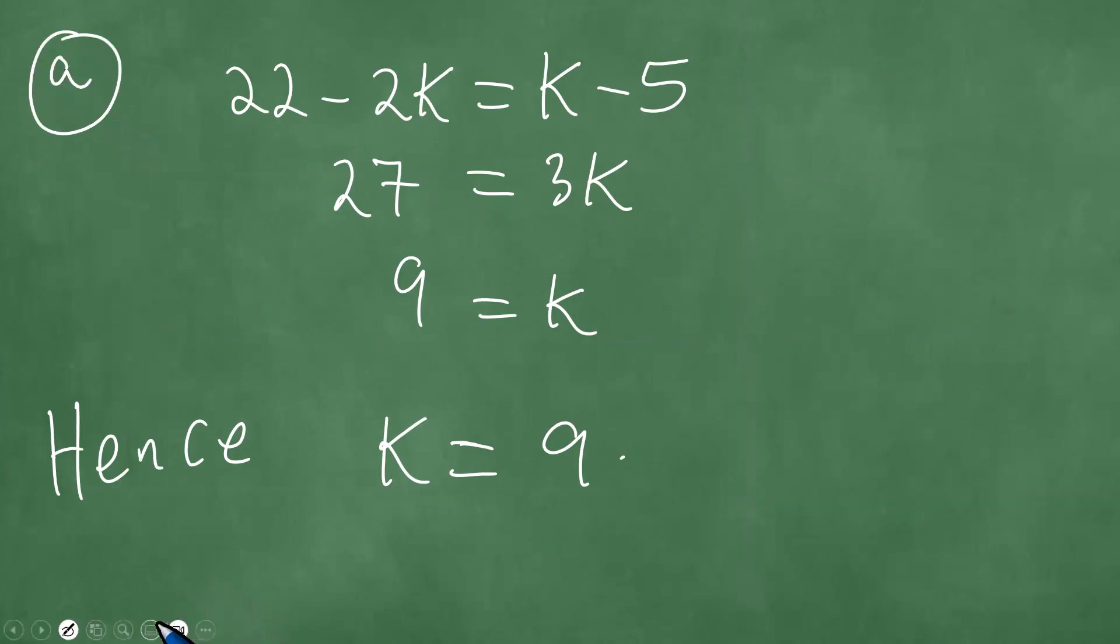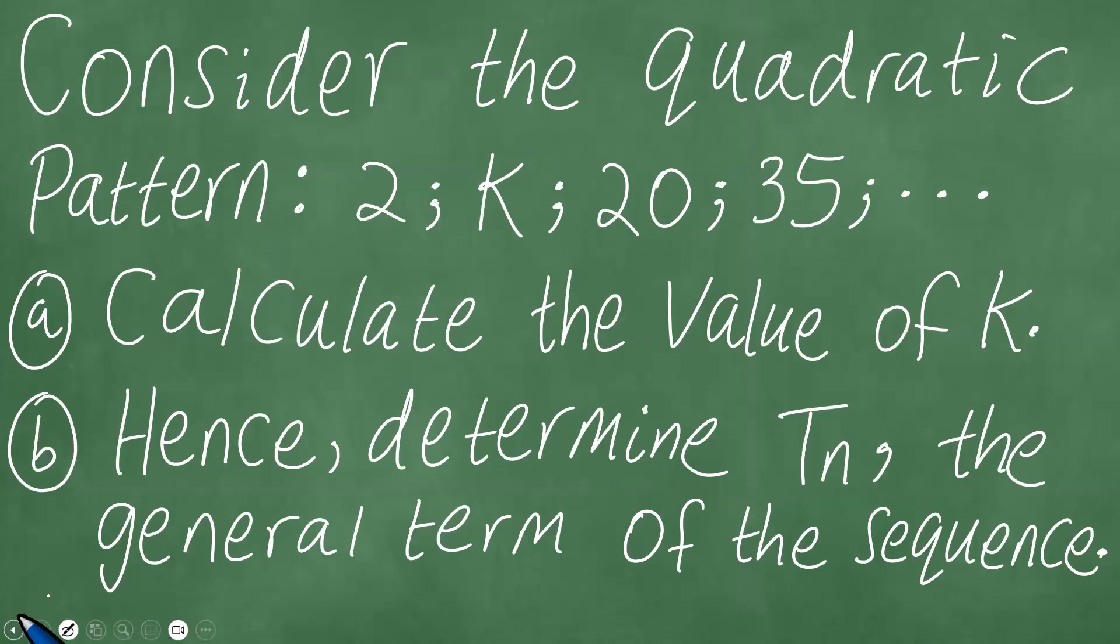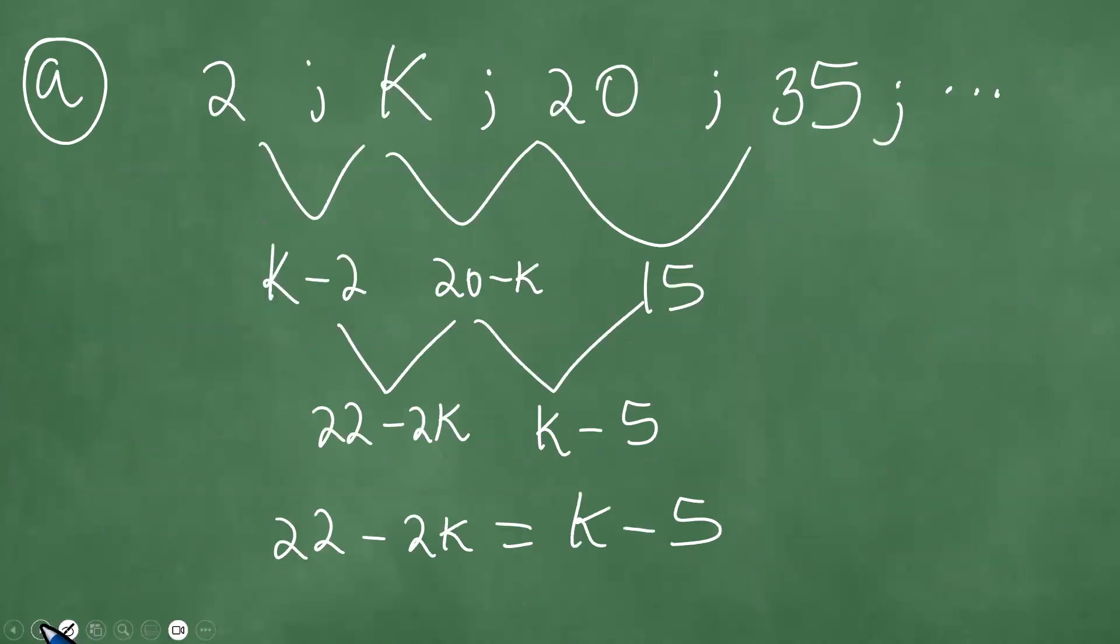Then we have the second part of the question, part b, which is hence determine Tn, the general term of the sequence. So if k equals 9, and we have the sequence 2, k, 20, and 35, we have the following for part b: we're going to have exactly 2, 9, 20, 35, and so on.